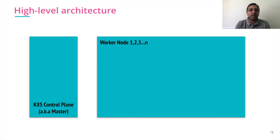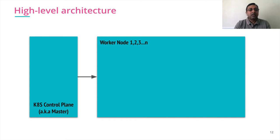In Kubernetes it is also similar. We have a Kubernetes master and Kubernetes worker nodes. All requests are submitted to the master and actual applications or jobs run on the worker nodes. Let's look at the different components present in each of the master and worker nodes.